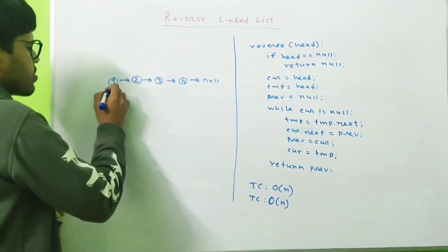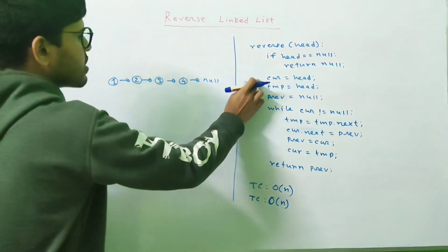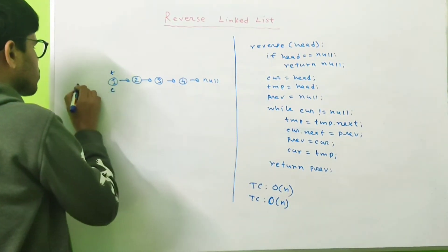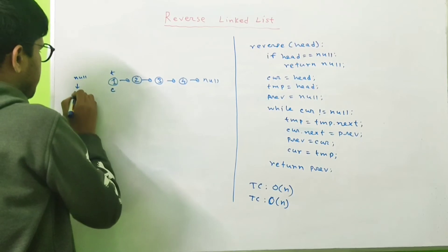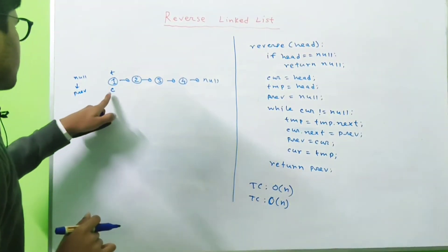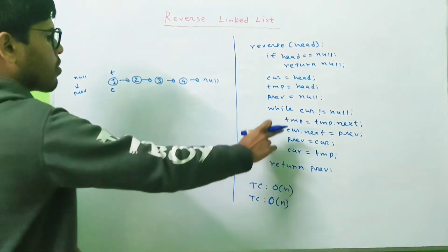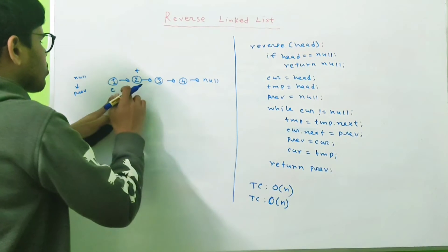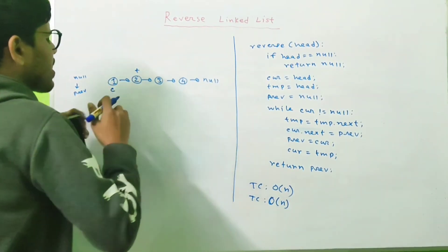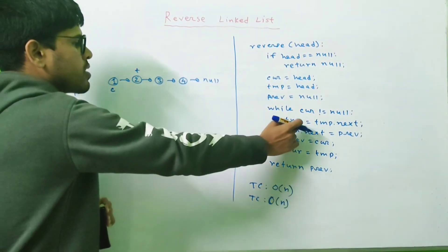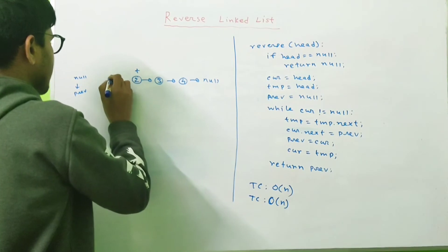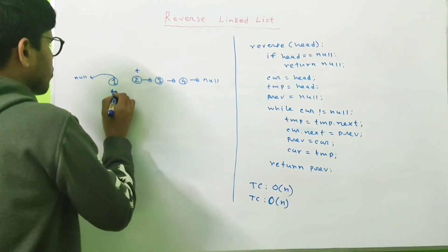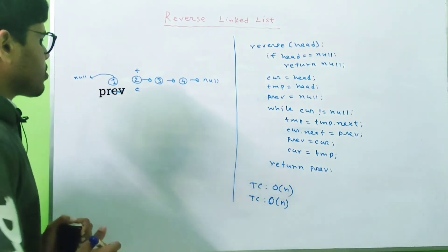Let's assume we're given this linked list. We initialize current to the head node, temp also points to the head node, and prev points to null. We move temp to the next node first, because if we set current.next = prev, the link to the next node will be disconnected and we can't access it anymore. So we save the next node in temp, then disconnect and connect current.next to prev. Then move prev to current and current to temp.